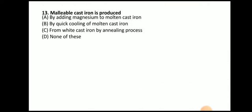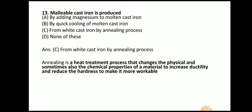Next question: Malleable cast iron is produced? The answer is from white cast iron by the annealing process. Annealing is a heat treatment process that changes the physical and sometimes chemical properties of a material to increase ductility and reduce hardness to make it more workable.